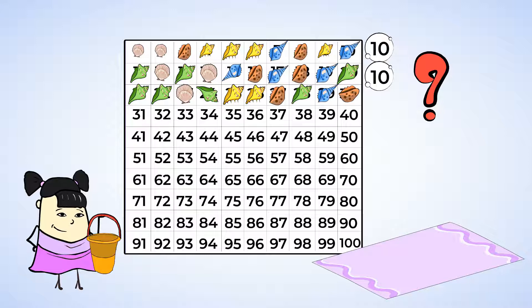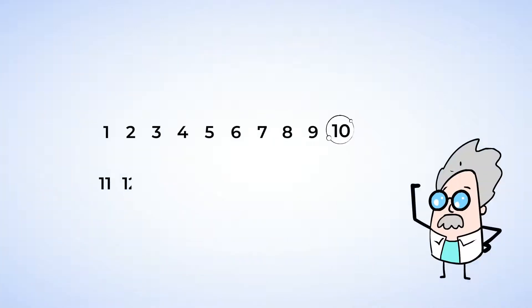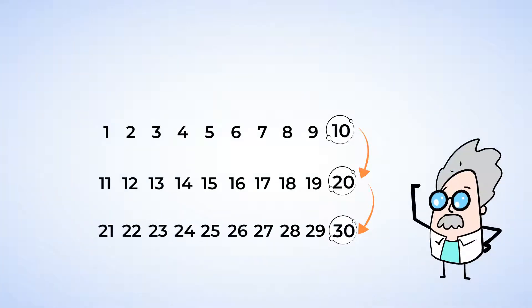Wonder if each row on our hundreds chart is also a row of 10. If so, when we put things in groups of 10, we can use our hundreds chart to count by 10. Here, we can count 10, 20, 30. Since we skipped over a bunch of numbers, we can call this skip counting. Skip counting is a way of counting faster by jumping over some numbers.